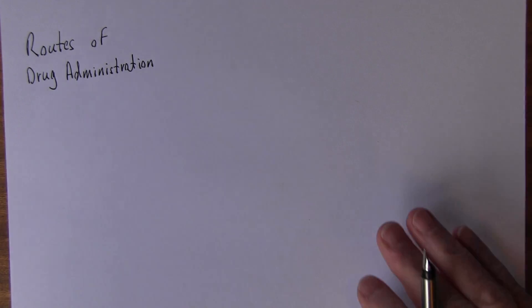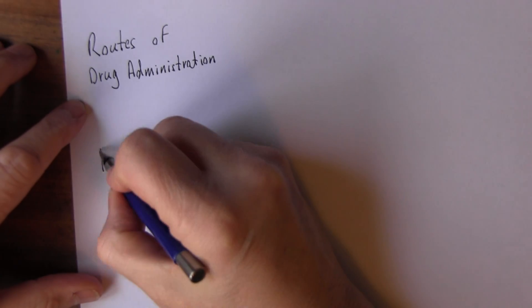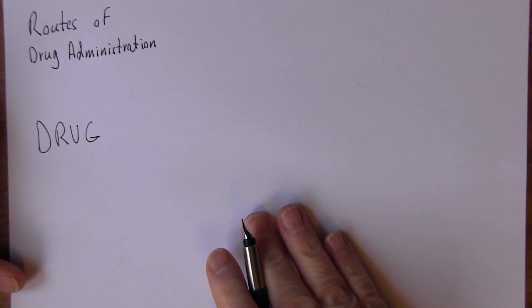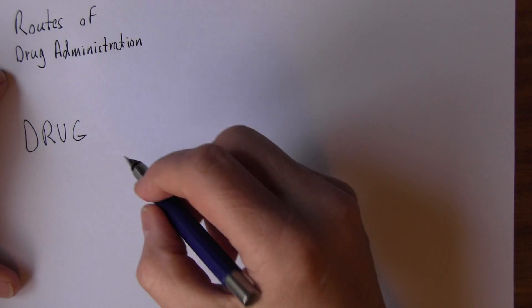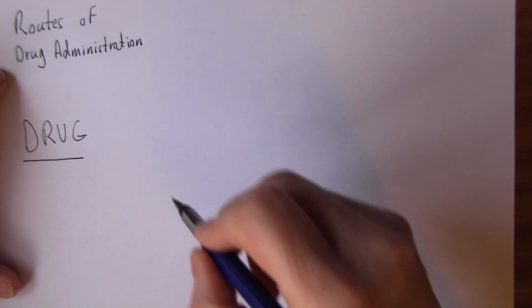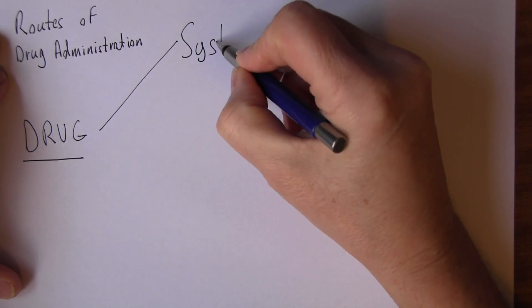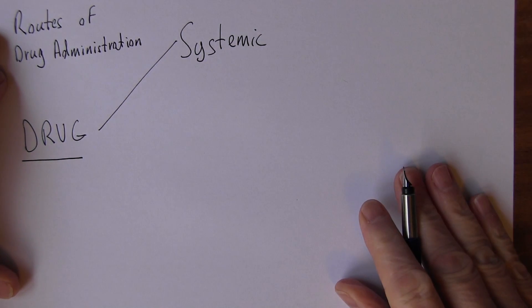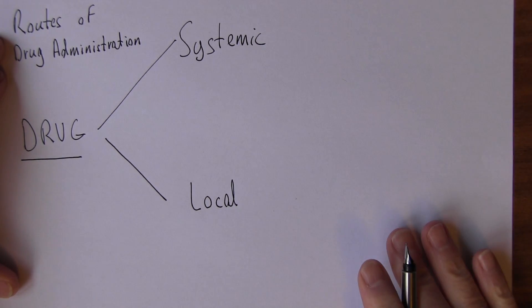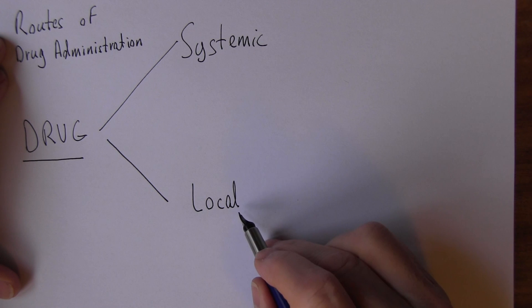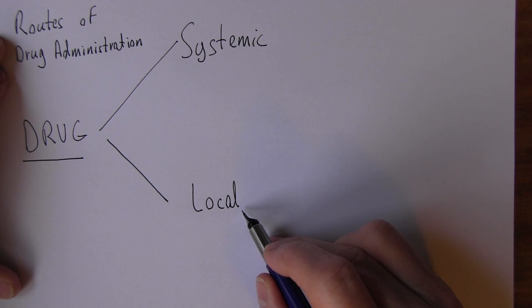In this talk we're going to be thinking about routes of drug administration — how do we give drugs? We start off with a drug, but we need to get it into the body to have some effect. We can think of two ways: we can give drugs systemically or we can give them locally. Whenever we give drugs, we must give the right dose of the right drug to the right patient at the right time via the correct route.